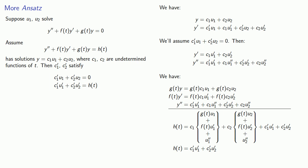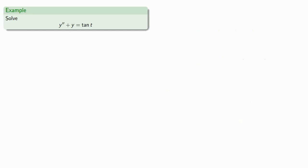Now I have two equations that c1 prime and c2 prime satisfy and so we can solve for c1 prime and c2 prime. Let's try to solve this differential equation which has no obvious annihilator.